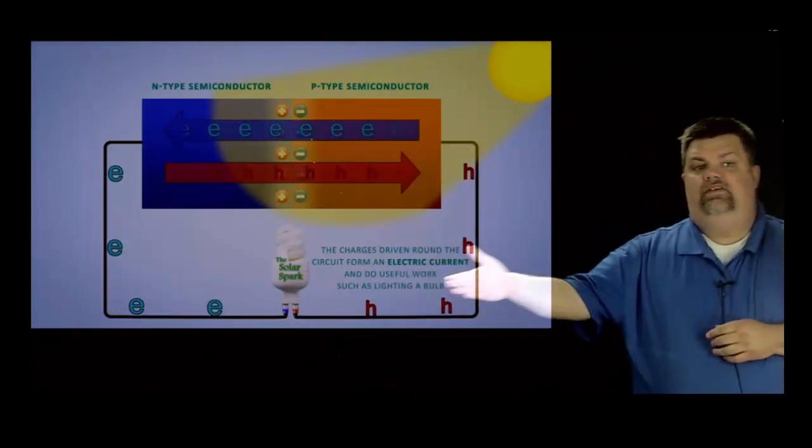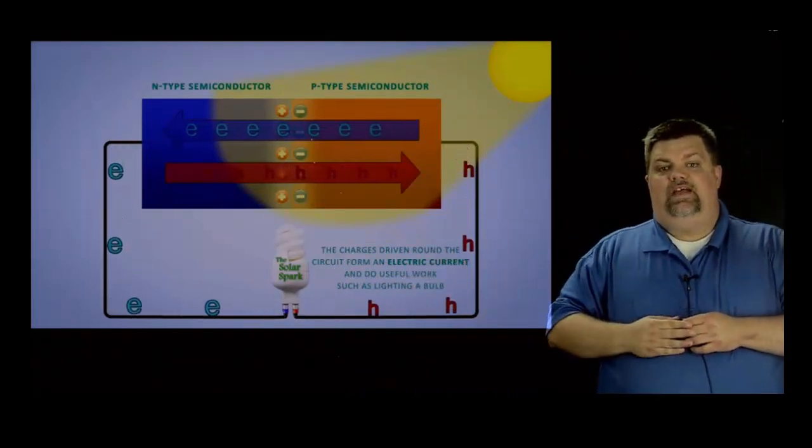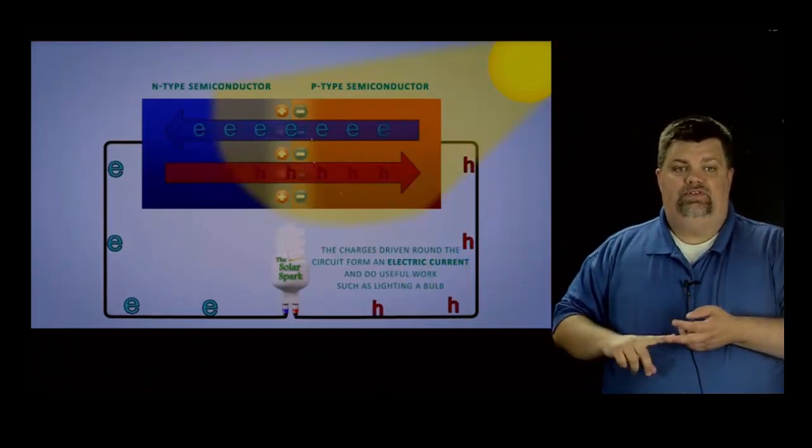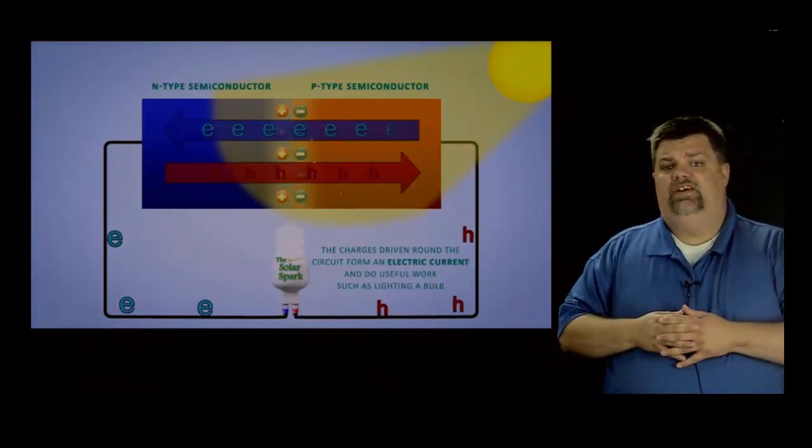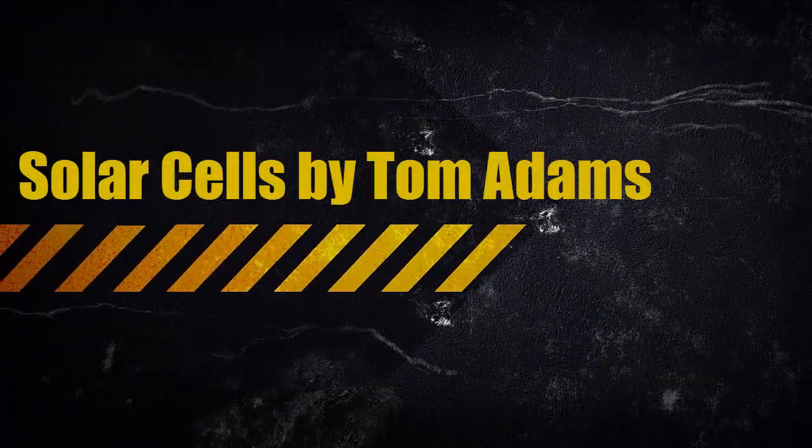When we have electrons that are flowing, when they get to that resistor, the light bulb, toaster or whatever electric device we hook it up to, work is done. And that's basically how solar cells are made.